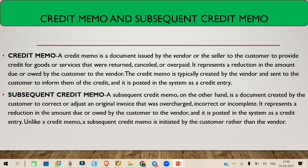In a subsequent credit memo, only the price is reduced — the quantity remains the same. You are just reducing the price. So in a subsequent credit memo, price will be reduced but quantity stays the same, whereas in a credit memo, both price and quantity are reduced.